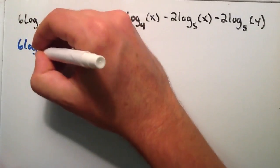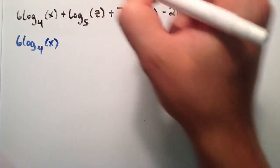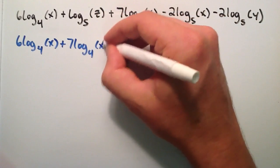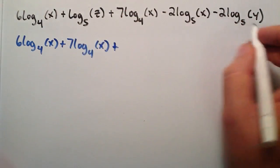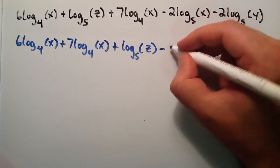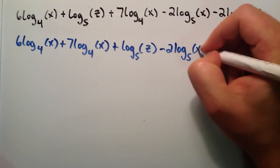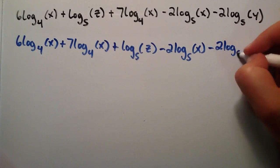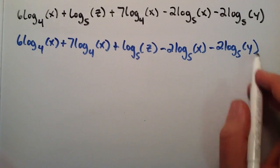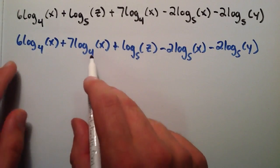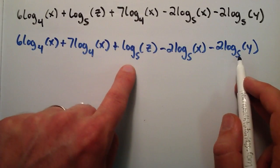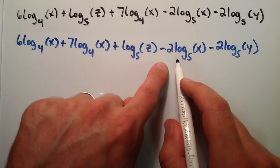So we're going to do 6 log base 4 of x, and then take the other base 4 and add it: plus 7 log base 4 of x. Then we're going to put all the log base 5's next to each other: log base 5 of z, minus 2 log base 5 of x, minus 2 log base 5 of y. It's the exact same expression — I just organized the base 4's together and the base 5's together, so I can condense each group down into one single logarithm.